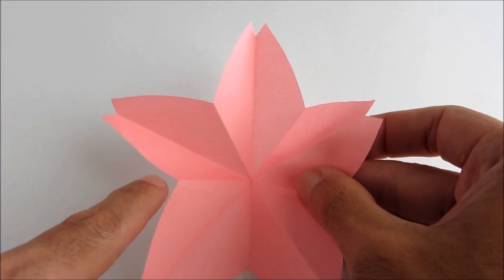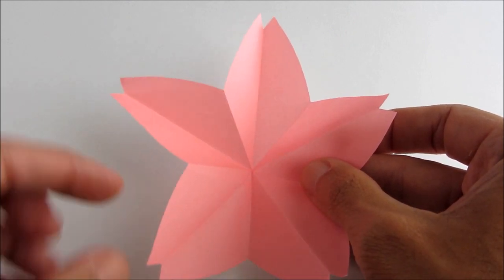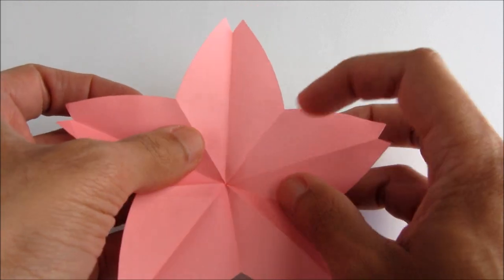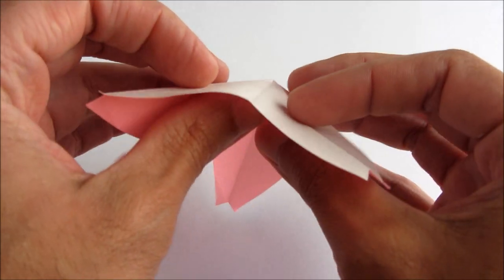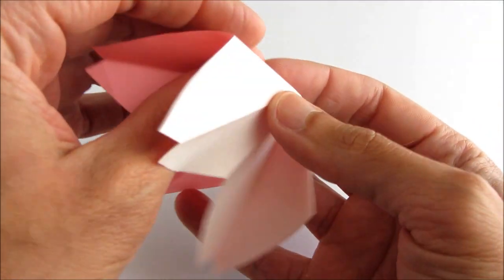So that means you're going to have to refold some of these folds that we're showing here. So in this case a mountain fold is going to become a valley fold, so you can just refold that.